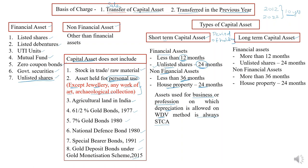Now moving on to long-term capital asset. A financial asset held for more than 12 months — if the asset is sold after 12 months from the date of purchase — it is a long-term capital asset. For unlisted shares, more than 24 months. For non-financial assets, more than 36 months. If it is a house property, more than 24 months, then that is called a long-term capital asset. Only if you understand this classification can you classify an asset as short-term or long-term.